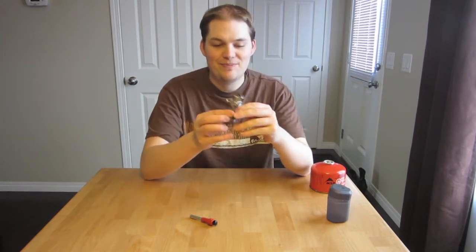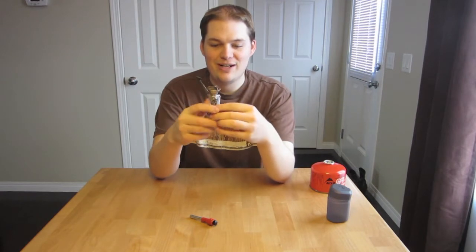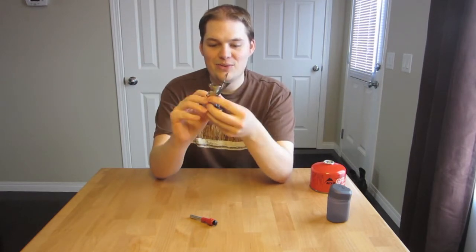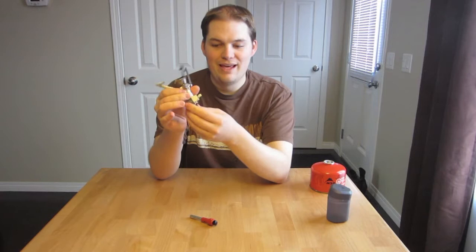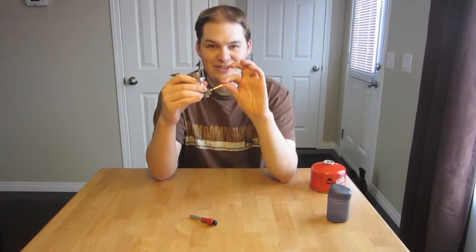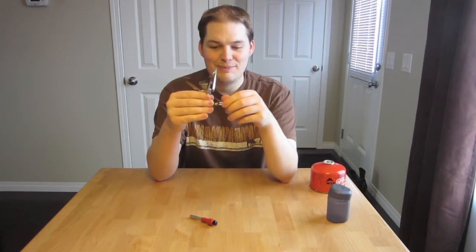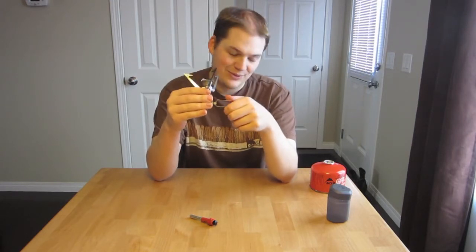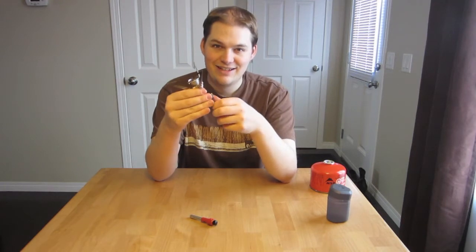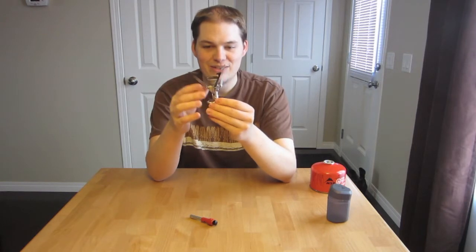So here's the stove itself. Pretty easy to open it up. Just pull the legs out and turn them around. That's for each of the three. And then the fuel handle just turns out here. Make sure you turn this off. I've done it a couple times where it's been on and I've screwed it onto the canister and gas just keeps coming out.